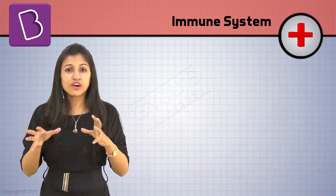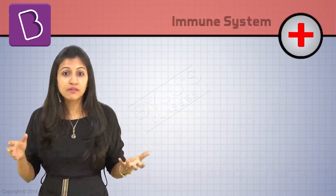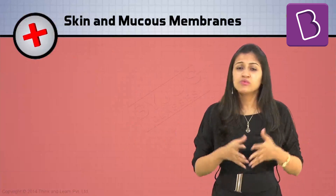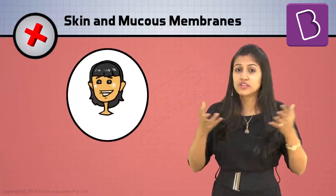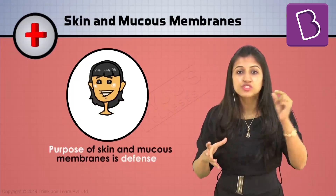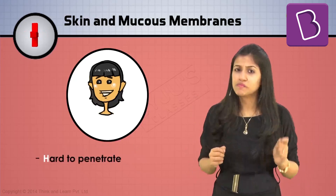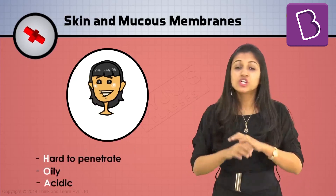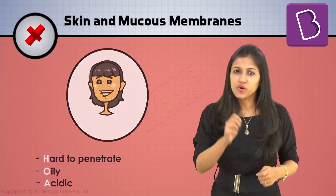At first, the invaders meet the border guards of our army: our skin and all other mucous membranes. We think that since our skin is so occupied holding all our organs and organ systems inside, we forget the main purpose for which it was created — defense. It's pretty hard to penetrate, oily, acidic — a perfect barrier to most pathogens that want to wiggle their way into us.